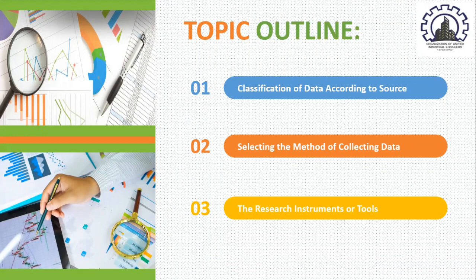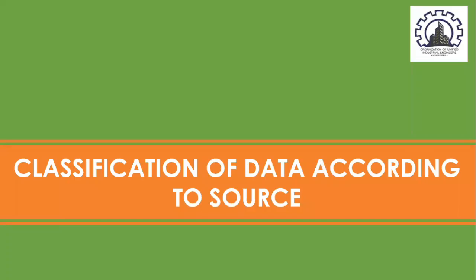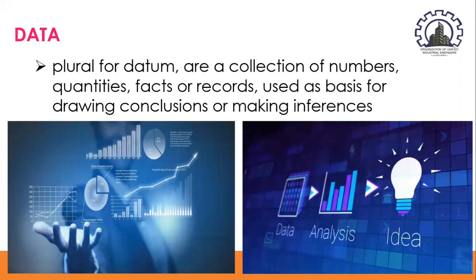In order for us to get started, let us first discuss our first key area of our lesson, and that would be the classification of data according to source. So what is meant by data? Well, data — plural for datum — refers to the collection of numbers, quantities, facts, or records used as a basis for drawing conclusions or making inferences. We can tell that data are what research is searching for and which are subjected to analysis, statistical procedures, and interpretation so that inferences, principles, or generalizations are drawn.